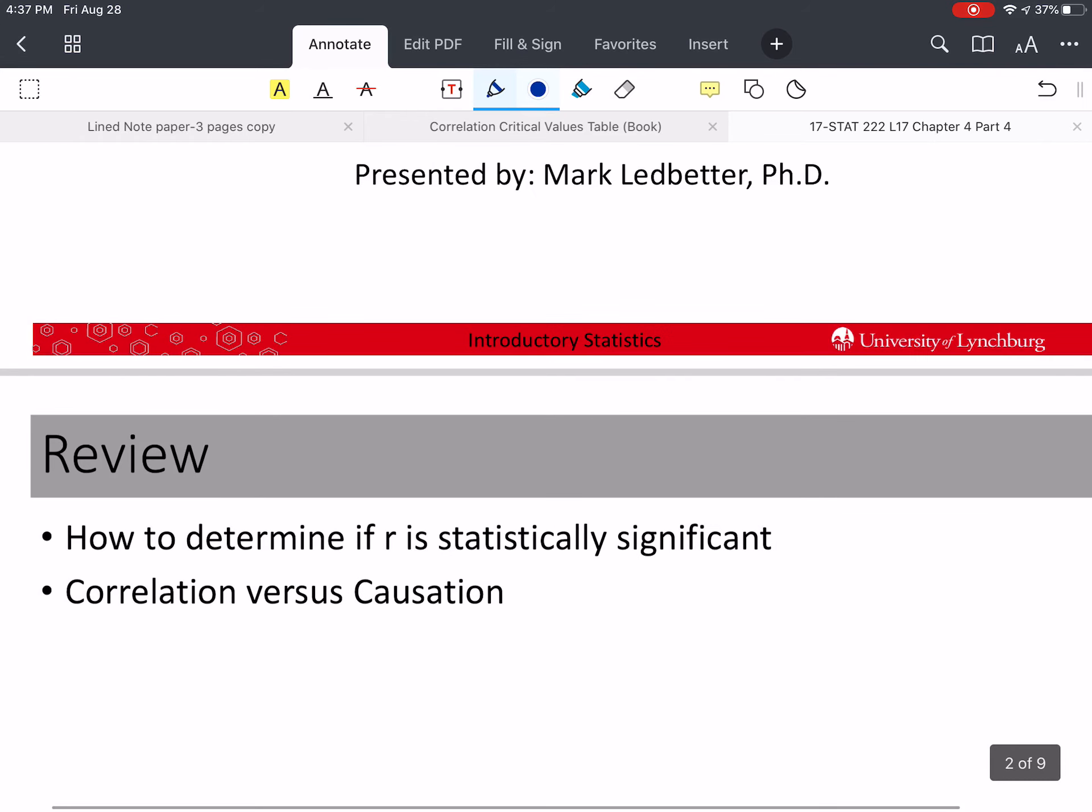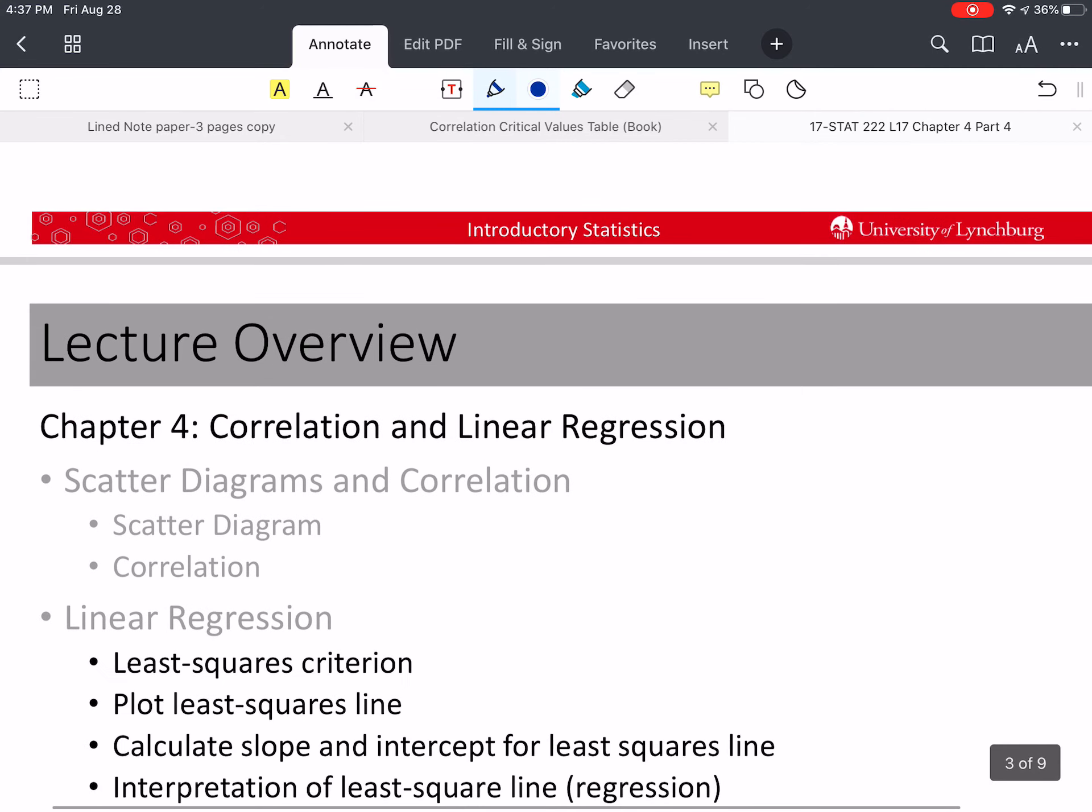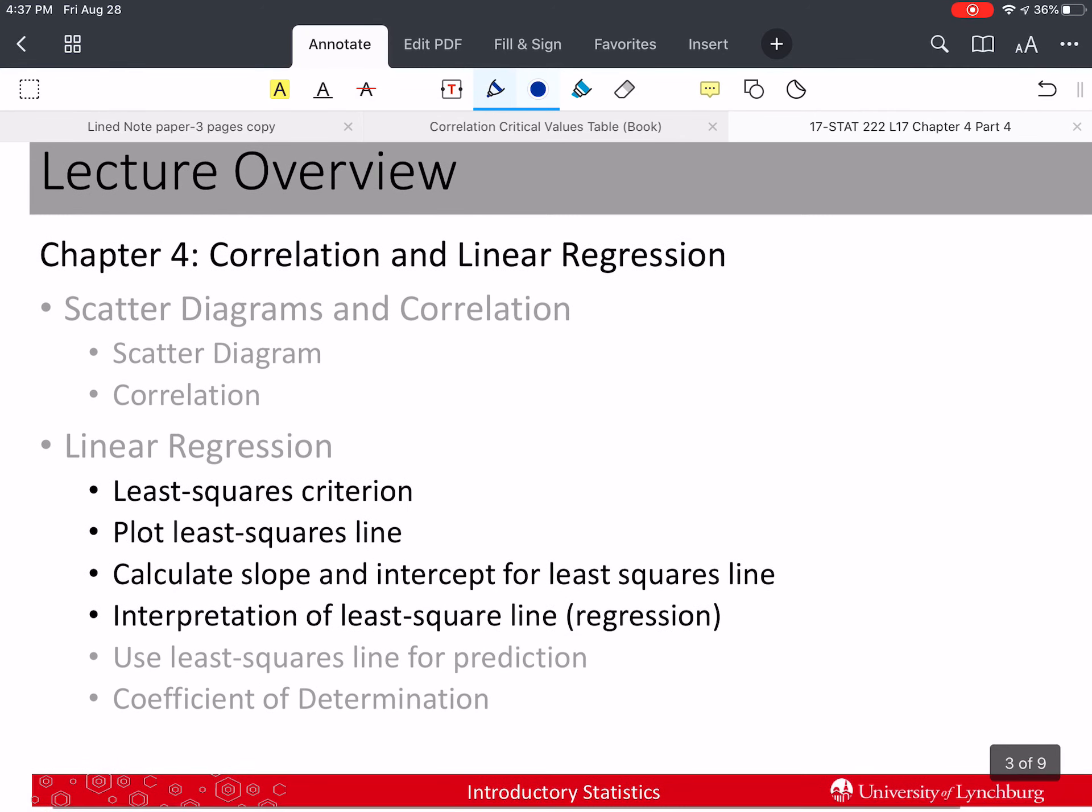Last time we talked about how to determine if R is statistically significant or not. We also talked about the fact that correlation does not mean causation. In other words, correlation doesn't prove cause and effect. One of the reasons for that is lurking variables.